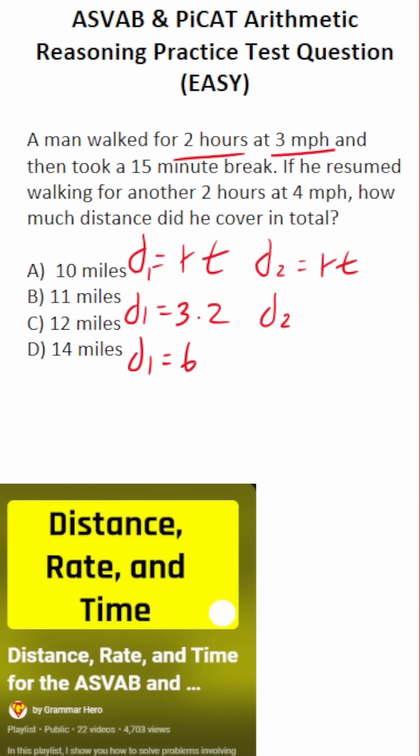Let's do the same thing for the distance he walked after his break. He walked at a rate of four miles per hour for two hours. So after his break, he walked a total distance four times two or eight miles.